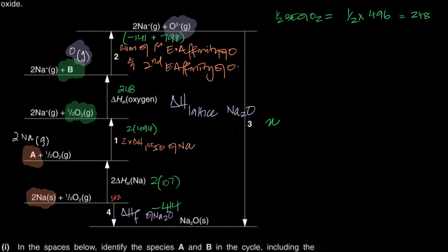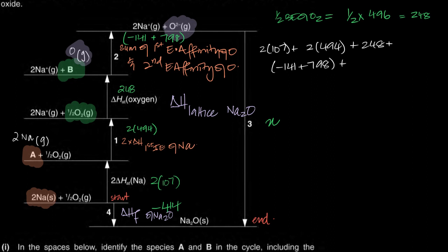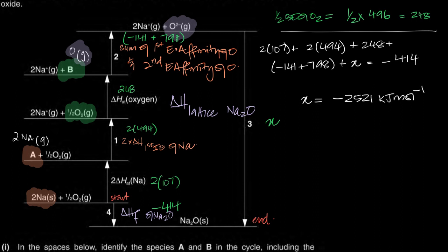Using Hess's law, all the known values equal the formation enthalpy: 2×107 + 2×494 + 248 + (−141) + 798 + x = −414. Solving for x gives the lattice enthalpy as approximately −2521 kJ/mol. That is the answer for part C of the question.